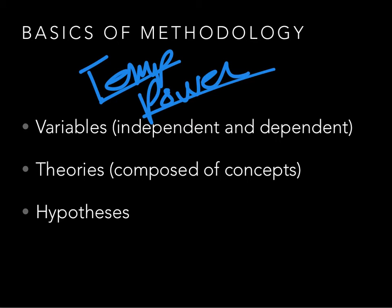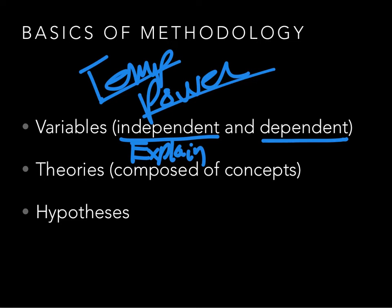There are two big kinds of variables you may be familiar with: independent and dependent. Independent variables are the ones that we think explain something. Maybe I think power explains why some people will talk in class or not — so power would be our independent, our explanatory variable. The dependent variable is the thing we're trying to understand or explain. The independent variable, or more than one, will be explaining our dependent variable.